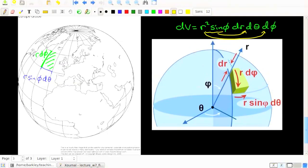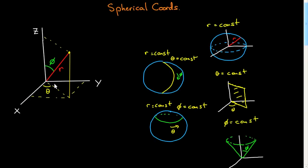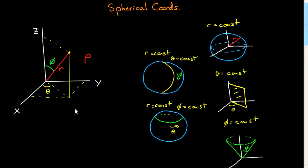If you have any trouble, you need to understand this picture and the relationships between these various angles. One final thing: the notation for spherical coordinates is not universal. Sometimes ρ is used for the radial coordinate. More potentially confusing is that sometimes the angle I call θ is called φ and vice versa in different sources. I will not use that notation, but you should be aware that different sources will use different conventions for these two angles.